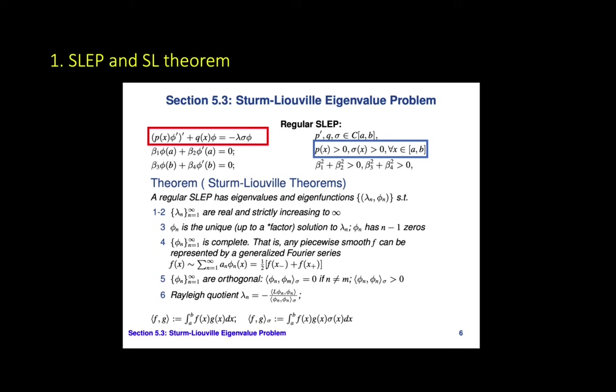Note that the function p and sigma should be positive to make this problem regular. The heat equation and the wave equation we saw in previous videos were examples of the regular SLEP. Sturm-Liouville theorem describes the properties of this regular SLEP. While you can pause the video and go through them, I want to point out the orthogonality between the eigenfunctions, meaning that the dot product between the nth eigenfunction and the mth eigenfunction is zero if n does not equal to m. We will check whether the eigenfunctions show orthogonality after we solve SLEP numerically.